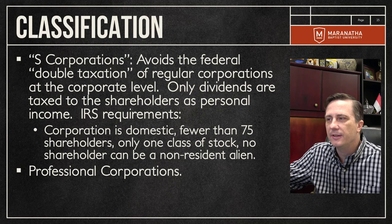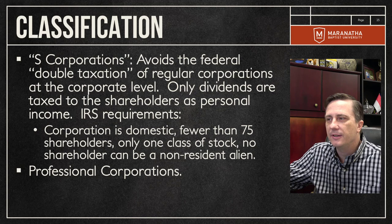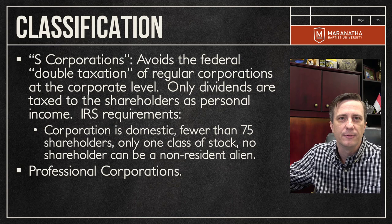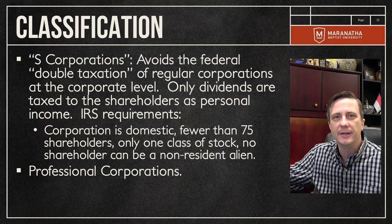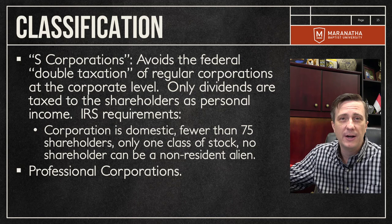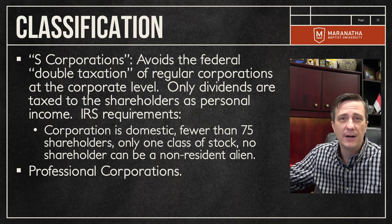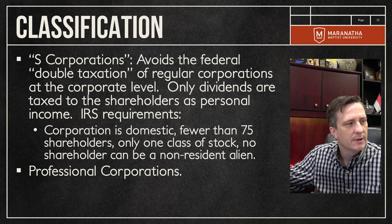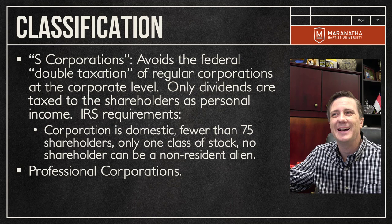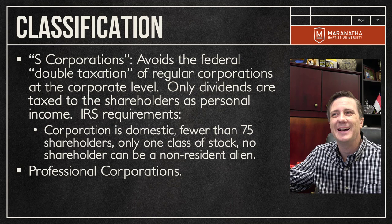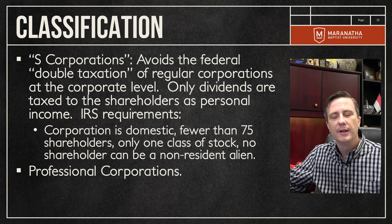An S corporation limits the number of shareholders — 75 in some states, 150 in Illinois — and has some LLC-like benefits, avoiding the double taxation problem through an IRS designation. Some states also require professional corporations for lawyers, doctors, engineers, and accountants — designated as PA (professional association) or SC (service corporation) — to signal to the public that the firm is organized as a corporation rather than a partnership.